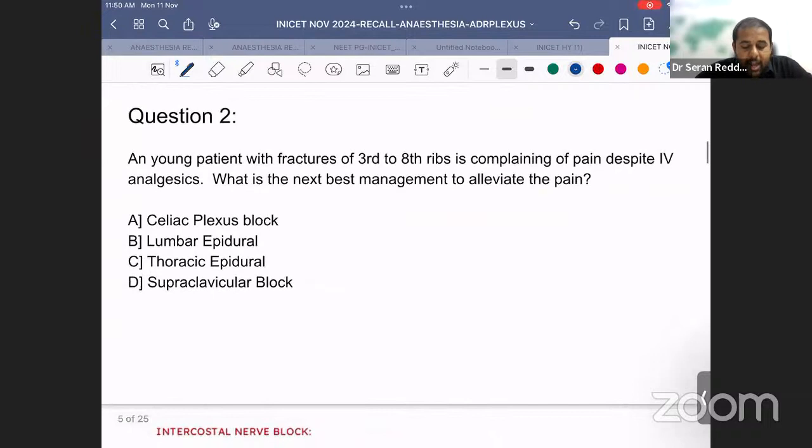The second question: A young patient with fractures of 3rd to 8th ribs is complaining of pain despite IV analgesia. What is the next best management to alleviate the pain? Options: celiac plexus block, lumbar epidural, thoracic epidural, supraclavicular. For fractured ribs, the best is intercostal nerve block. We have discussed intercostal nerve block from 3rd to 8th ribs. Now, the intercostal nerve block is not in the options.